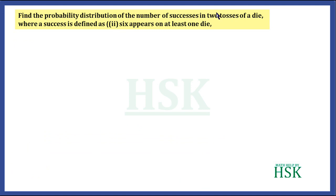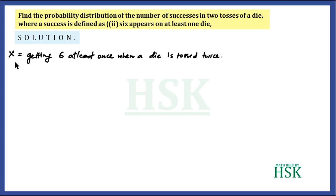Now for Part 2, we calculate the probability distribution of successes in two tosses of a die where success is defined as six appearing on at least one die. Similar to the previous part, the sample space is not essential but aids understanding. We assume X is the random variable representing getting a 6 at least once when a die is tossed two times. X can take the values 0 or 1.